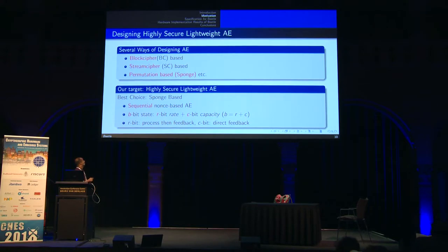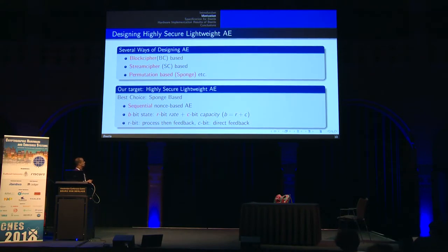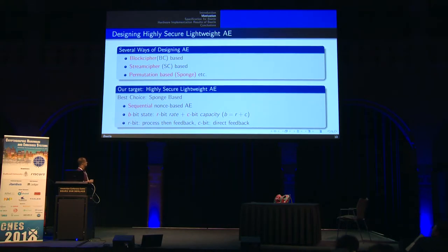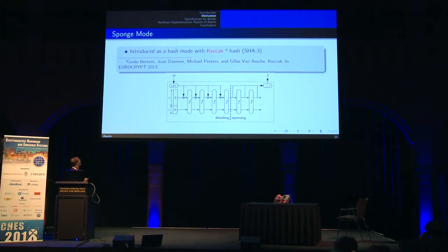We chose a sponge-based AE mode which is a sequential duplex-based AE mode. It uses a b-bit state permutation, divided into two parts: the first r-bit part called the rate, and the last c-bit part called the capacity, where b = r + c. Data is processed through the first r-bit rate, and it is a feedback-based mode. The first r-bit part feeds back to the next permutation call, and the last c-bit capacity is directly fed back. The original sponge was introduced as a hash mode with the Keccak hash function, the SHA-3 winner, and accepted at Eurocrypt 2013.